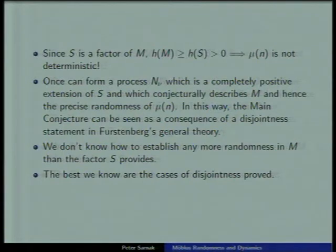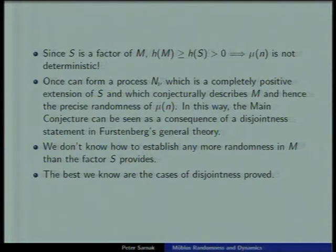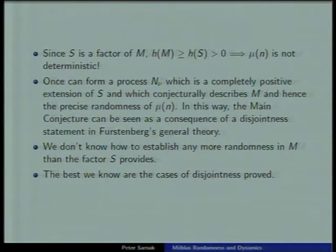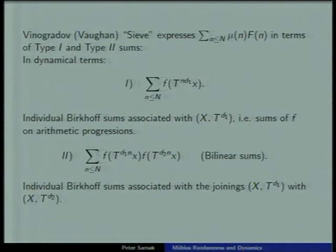Getting back to where we are: we have the Möbius flow, which I'm trying to understand. It has a factor — the square-free flow — which we understand well because we can do square-free sieving. From that we learn Möbius is random. But I'm getting the randomness from the zeros and the ones, not from the minus ones and the ones. Since the square-free flow has positive topological entropy and Möbius has extra entropy on top of that, you can't realize Möbius in a zero-entropy system — that's the proof.